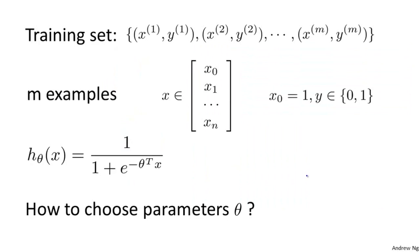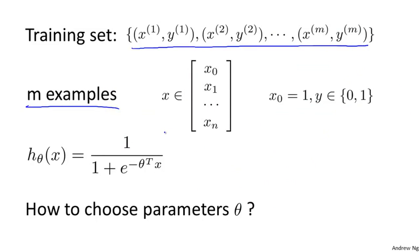Here's the supervised learning problem of fitting a logistic regression model. We have a training set of m training examples, and each of our examples is represented via a feature vector that's n+1 dimensional. We have x0 equals 1 — our 0th feature is always equal to 1. And because this is a classification problem, every label y is either 0 or 1.